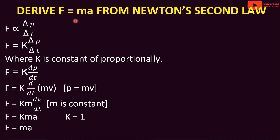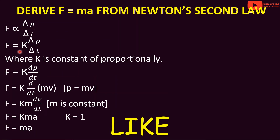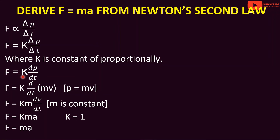When using a constant of proportionality, Newton's second law gives F proportional to delta P divided by delta T. Converting the proportionality sign to an equality: F is equal to k into delta P divided by delta T. Taking the limit as delta t tends to 0, F is equal to k into d by dt of p, where p is equal to mv. Therefore, F is equal to k into d by dt of mv, which equals k into m into d by dt of v.